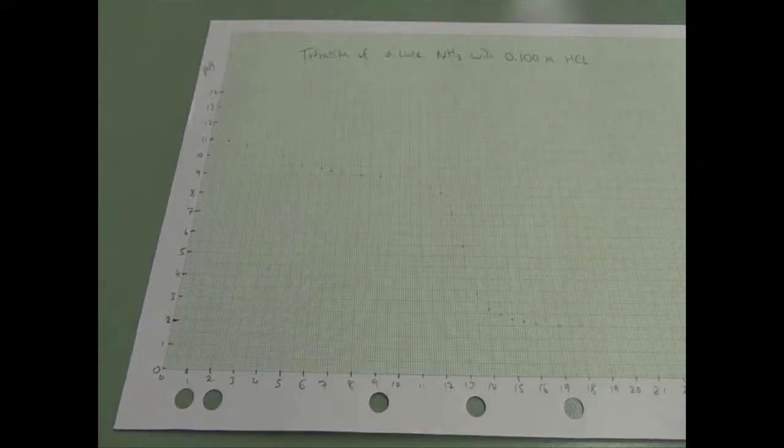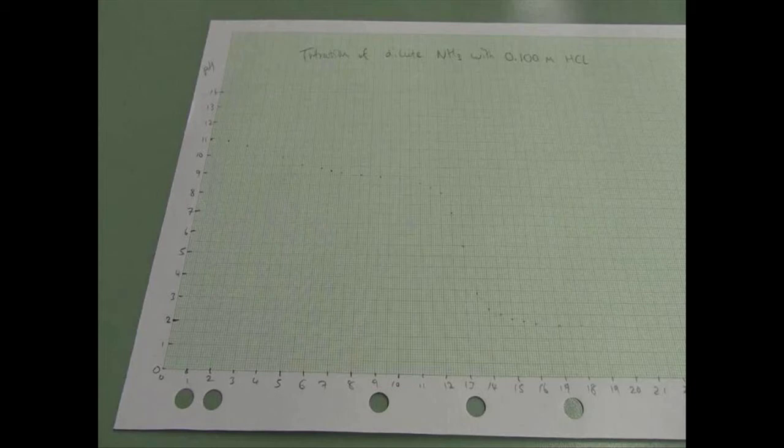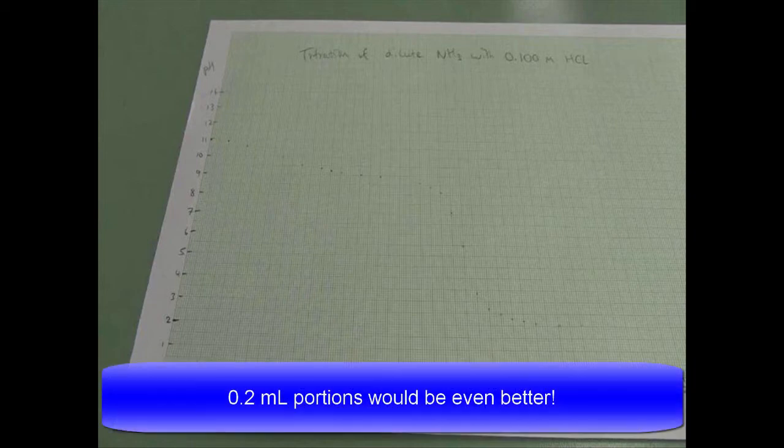But more importantly, you'll notice when the curve starts to get to the steep section. That's where the data that you are most interested in lies. So when you notice it's starting to curve over, you then need to decrease the size of your additions. Instead of adding one ml at a time, try adding 0.5 ml at a time, then count to ten, take a reading, and plot it.